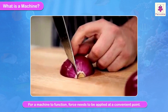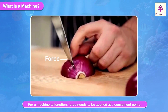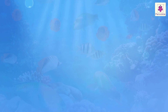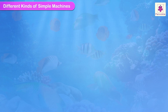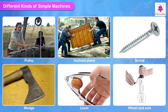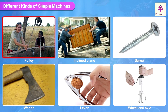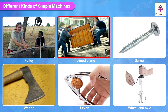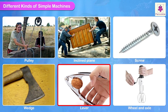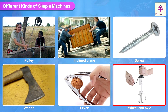For a machine to function, force needs to be applied at a convenient point. There are six kinds of simple machines used by us in our daily lives: the pulley, the inclined plane, the screw, the wedge, the lever, and the wheel and axle.